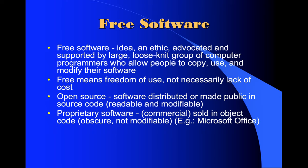Free software is an idea and ethic advocated by a large group of computer programmers who allow people to copy, use, and modify their software. Free means freedom of use, not necessarily lack of cost. There's also open source, which has a limited license — like Creative Commons. Open source is not free: it's a limited license primarily for software that you can contribute to and distribute without cost, but you can't commercialize it. Then there's proprietary commercial software. Those are the software categories.